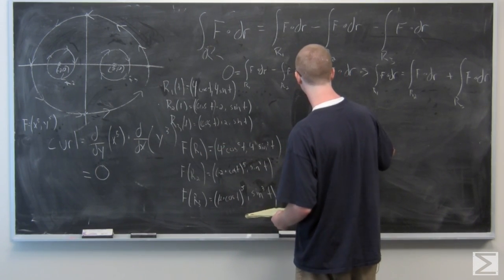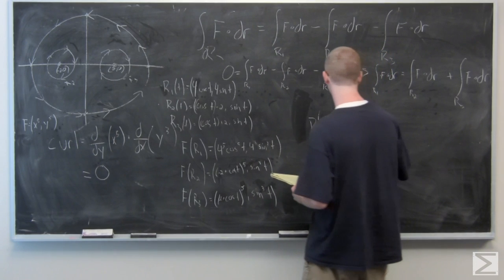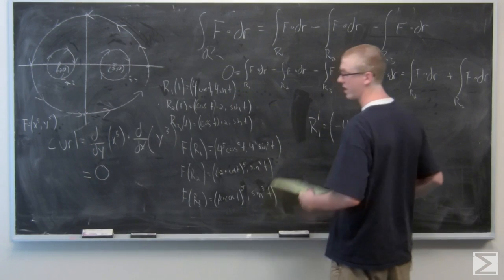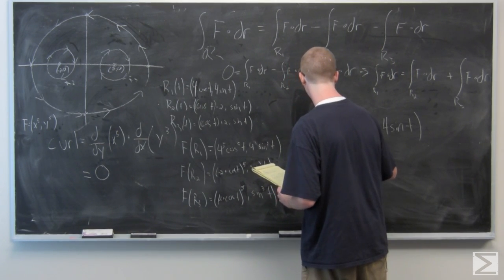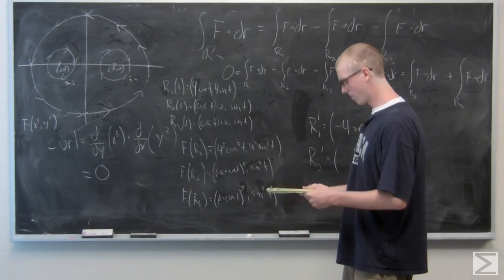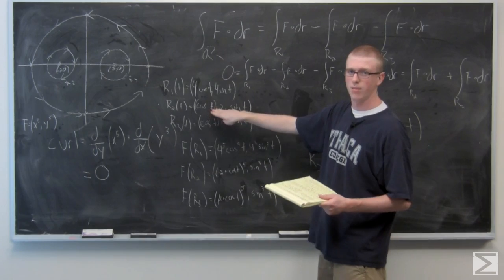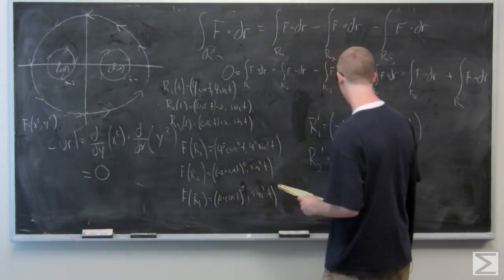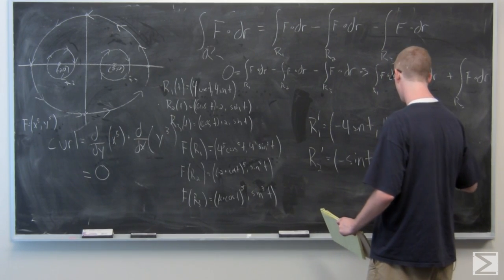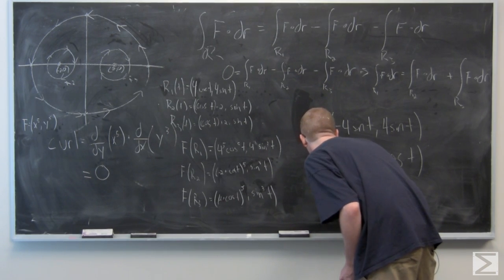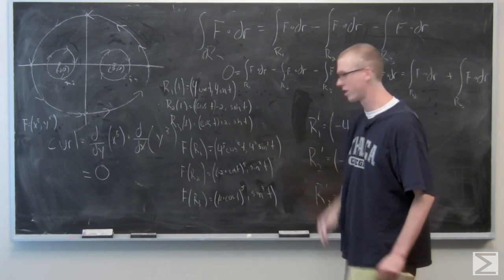Before plugging into the integral, let's take the derivatives. r1'(t) is the derivative of 4cos(t) which is −4sin(t), and derivative of 4sin(t) which is 4cos(t). For r2'(t), the constant −2 drops out so cos(t) − 2 becomes −sin(t), and sin(t) becomes cos(t), giving r2' = (−sin(t), cos(t)). r2 and r3 have the same derivative since the only difference is the constant shift.